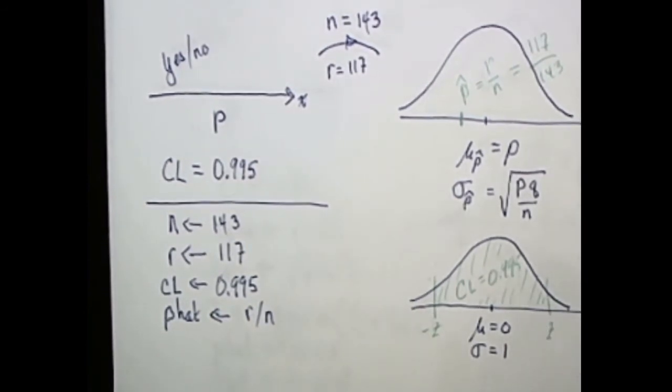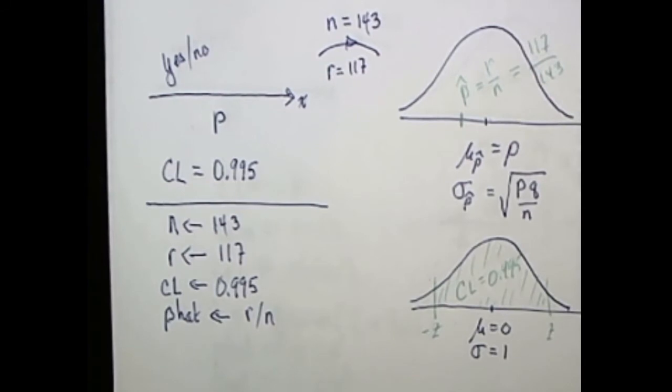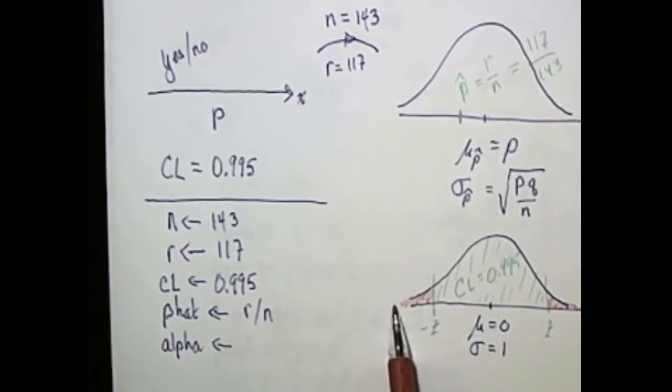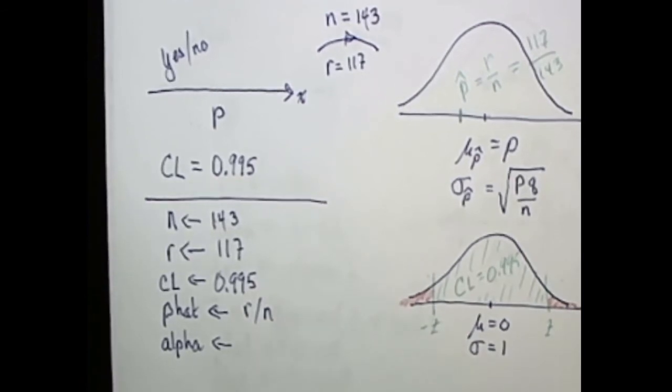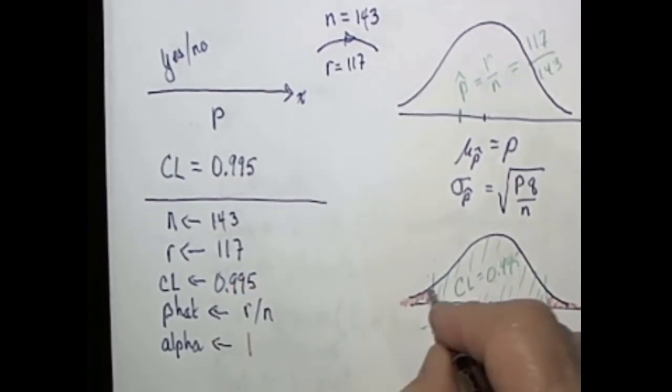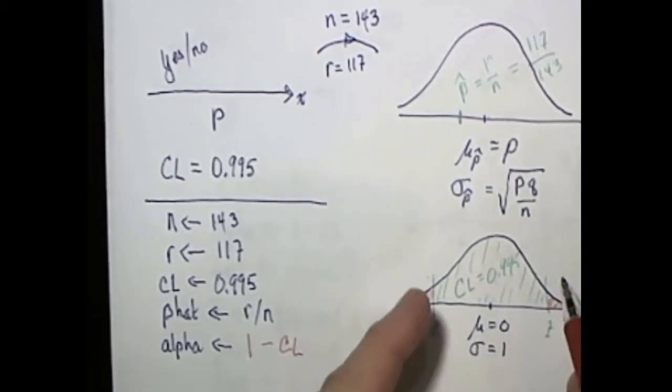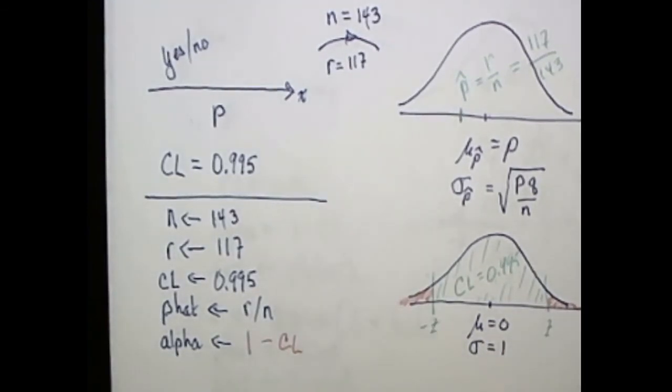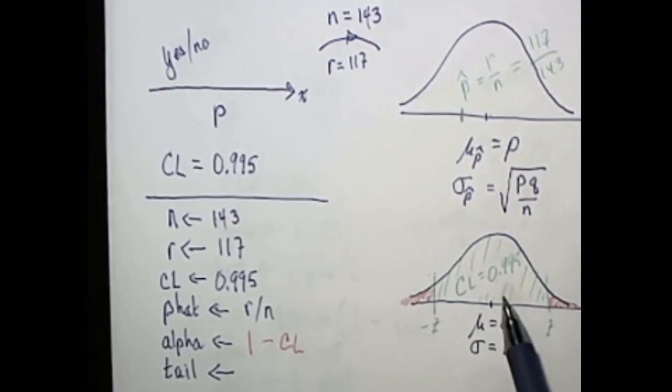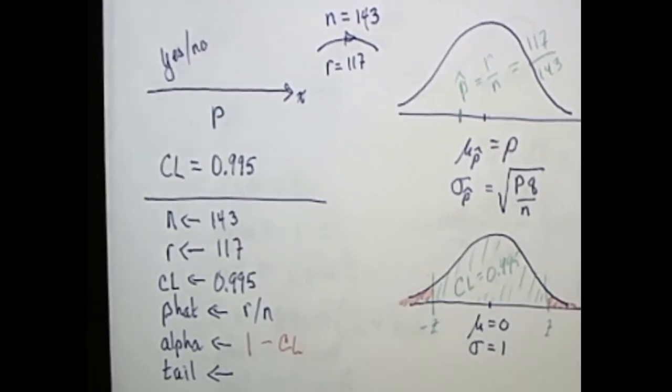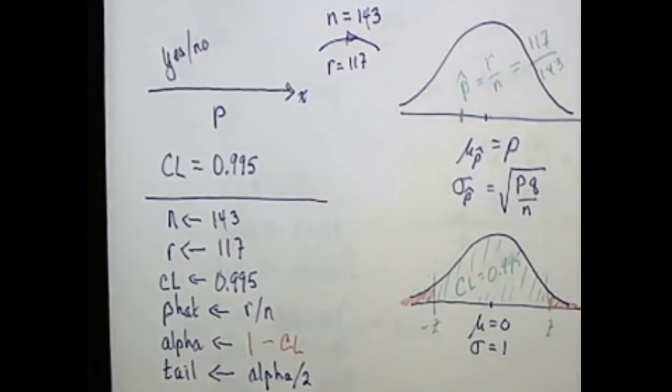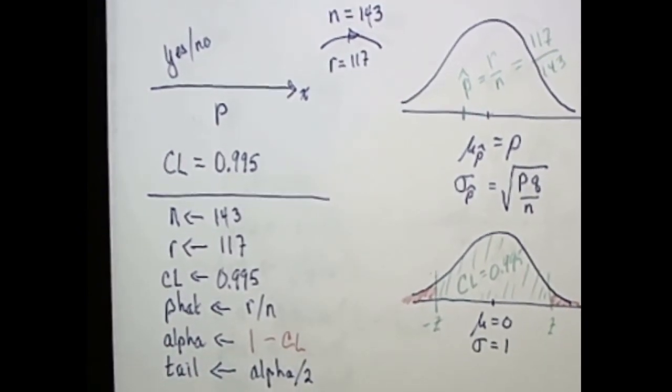It's a little more complicated to find out what z is. Let's define alpha to be the area that's outside of this confidence level. So it's these two tails. Now notice that that can be found easily because one is the total area under the curve minus the confidence level, and we've already told R what that is. So one minus the confidence level will be this red area outside of this confidence region. There are two tails, two symmetric congruent tails in alpha. We'd like to know the area in just one of those tails. Since they're both the same size, the area in one tail is going to be alpha divided by 2.